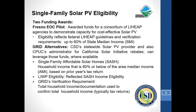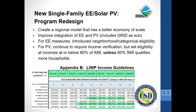We have created a new program model with regional administrators implementing an integrated energy efficiency and solar PV approach. Since we're no longer constrained by federal LIHEAP requirements, we've introduced neighborhood and categorical eligibility. Neighborhood eligibility means every house in one of the top 5% of census tracts is eligible. Categorical eligibility is established through being a recipient of other assistance programs, but we have not introduced categorical eligibility for solar PV.